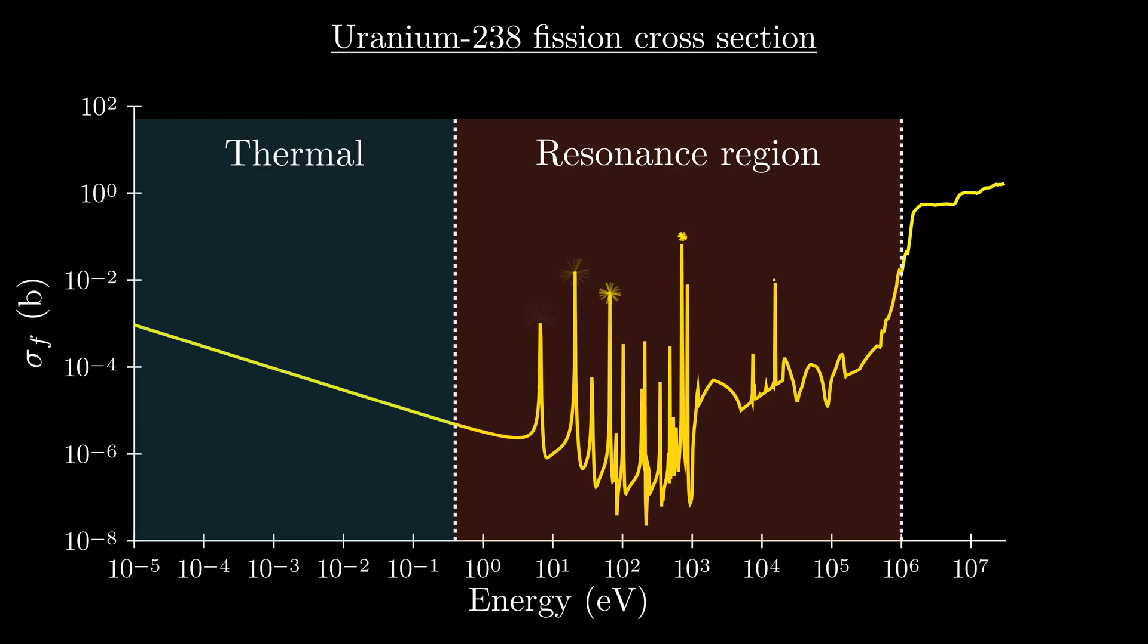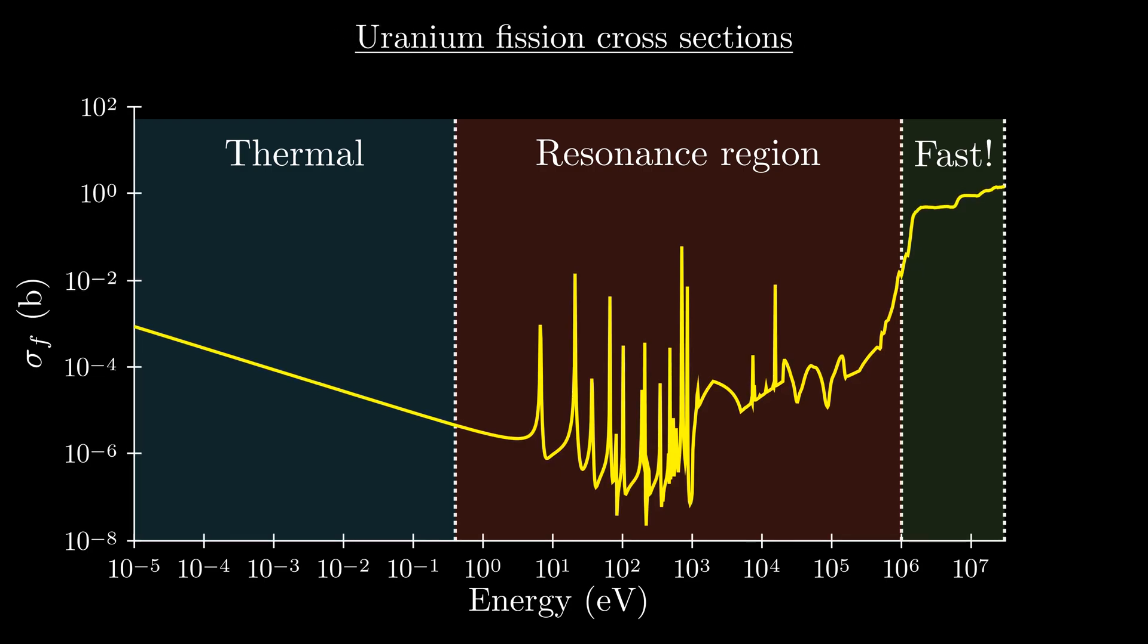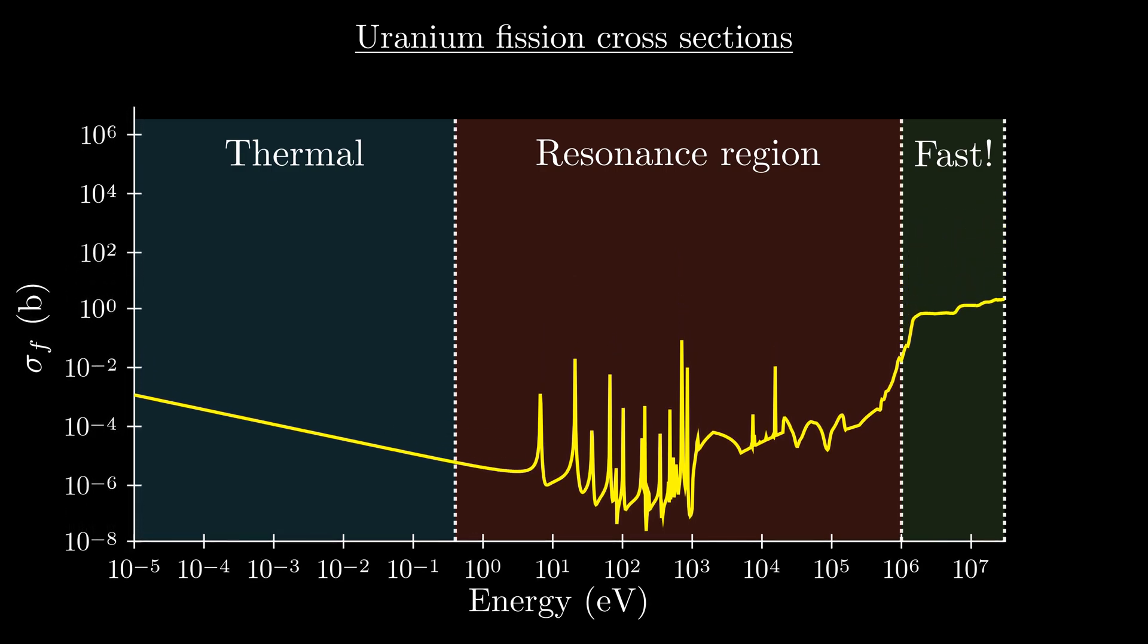As we go even higher in terms of energy, we get fast neutrons, which are indeed the namesake of this channel. When neutrons are emitted from splitting atoms, they're up at these energies. Finally, let's look at another isotope of uranium in order to see how cross sections can vary for a single element based upon the number of neutrons it has.